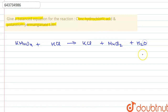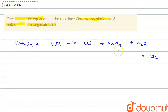Let's see if the reaction is balanced. There is one atom of potassium on each side. Manganese is also one on each side. However, the number of oxygen atoms is four on the reactant side whereas only one on the product side, so we will need to multiply water by four.